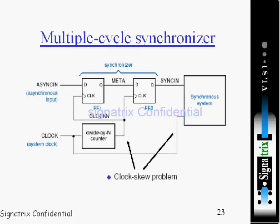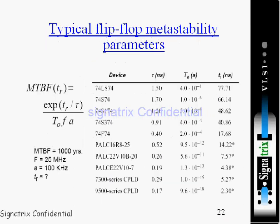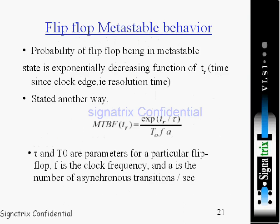I'll need to explain a little more on MTBF. Here is the MTBF equation. Coming to the explanation of each term: TR represents the result time allowed in excess of the normal propagation delay of the device. TO represents the metastability time constant for a flip-flop — it depends on the flip-flop. TO is equal to a constant related to the width of the time window or aperture.